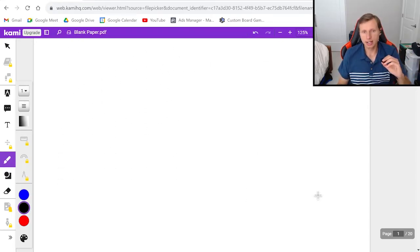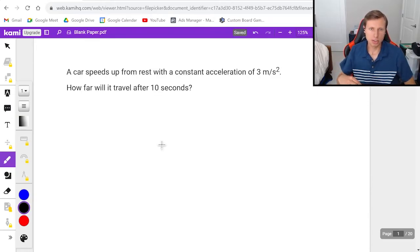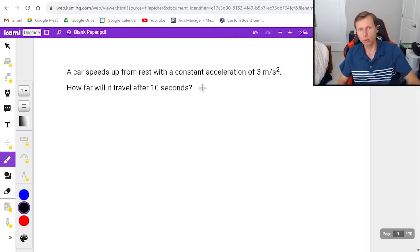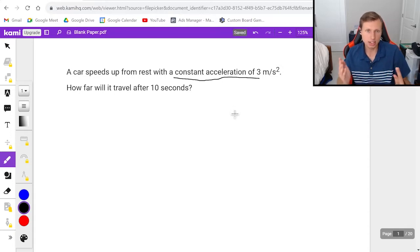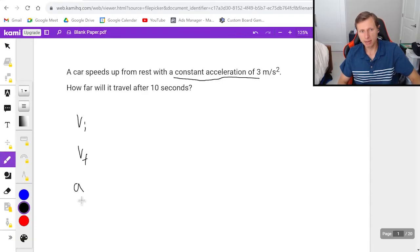So let's go ahead and get started with the first practice problem. A car speeds up from rest with a constant acceleration of 3 meters per second squared. How far will it travel after 10 seconds? So as you can see here, we meet our criteria for using the kinematic equations. In other words, we have a constant acceleration and it's not zero, which means we get to use kinematics.